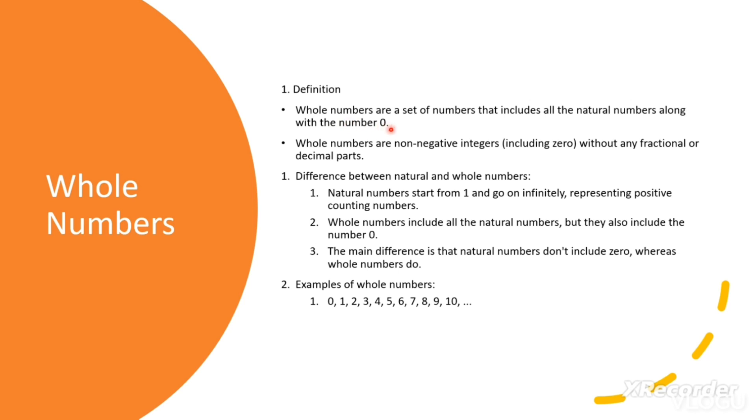Definition of whole numbers. Whole numbers are a set of numbers that includes all the natural numbers along with the number zero. Whole numbers are non-negative integers including zero without any fractional or decimal parts.